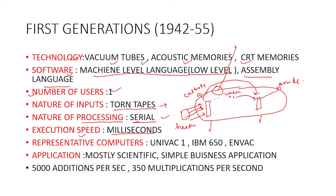In a diode, current flows in one direction and it has 2 electrodes. Sometimes a triode is also used, which has 3 electrodes — cathode, anode, and a grid. We also have a tetrode, which has 4 electrodes — anode, cathode, grid, and a screen.